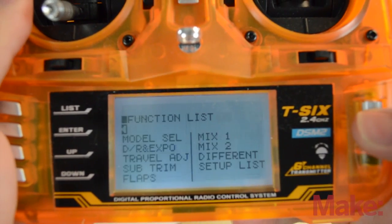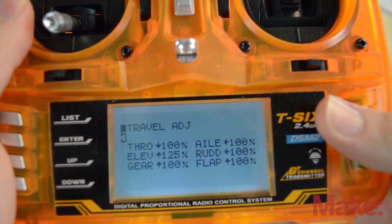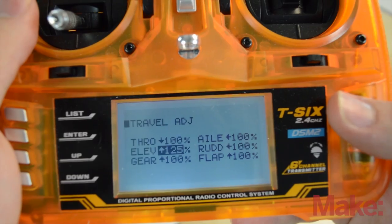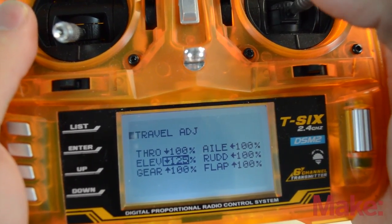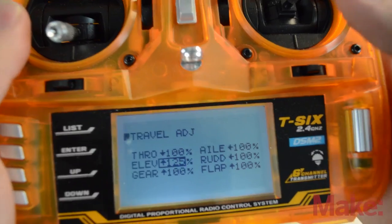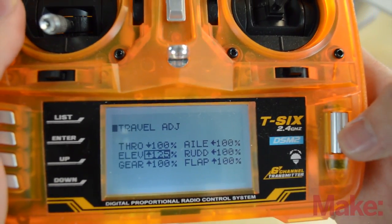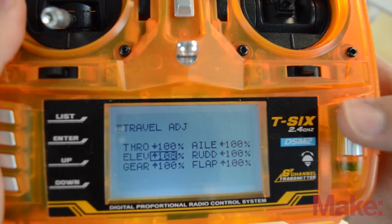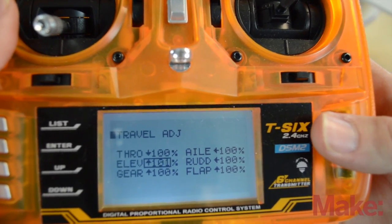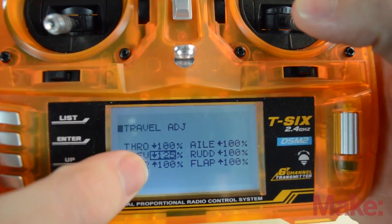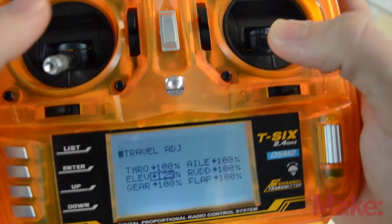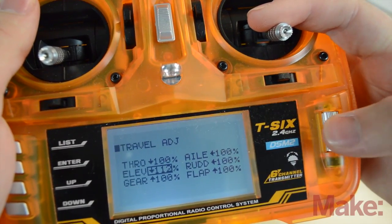In the menu, we're going to scroll over to travel adjust. We're going to go to the elevator and we see that it's 125 percent up. Now normally it's 100 percent, I don't know why that's set. This is a new model. Anyway, we're going to bring this down to 100 percent, and you can see the arrow goes down. It's 120, so we're going to hold that and scroll down to 100.